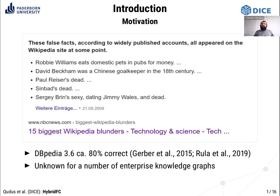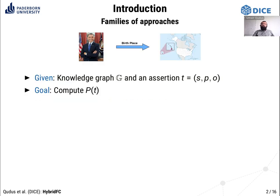Coming towards the problem statement: we have a given knowledge graph G and an assertion T, which contains subject, predicate, and object entities. We compute the likelihood of the assertion being true or false. An example assertion is Barack Obama's birthplace is Hawaii. Multiple families of approaches have been proposed in the literature to address this problem.